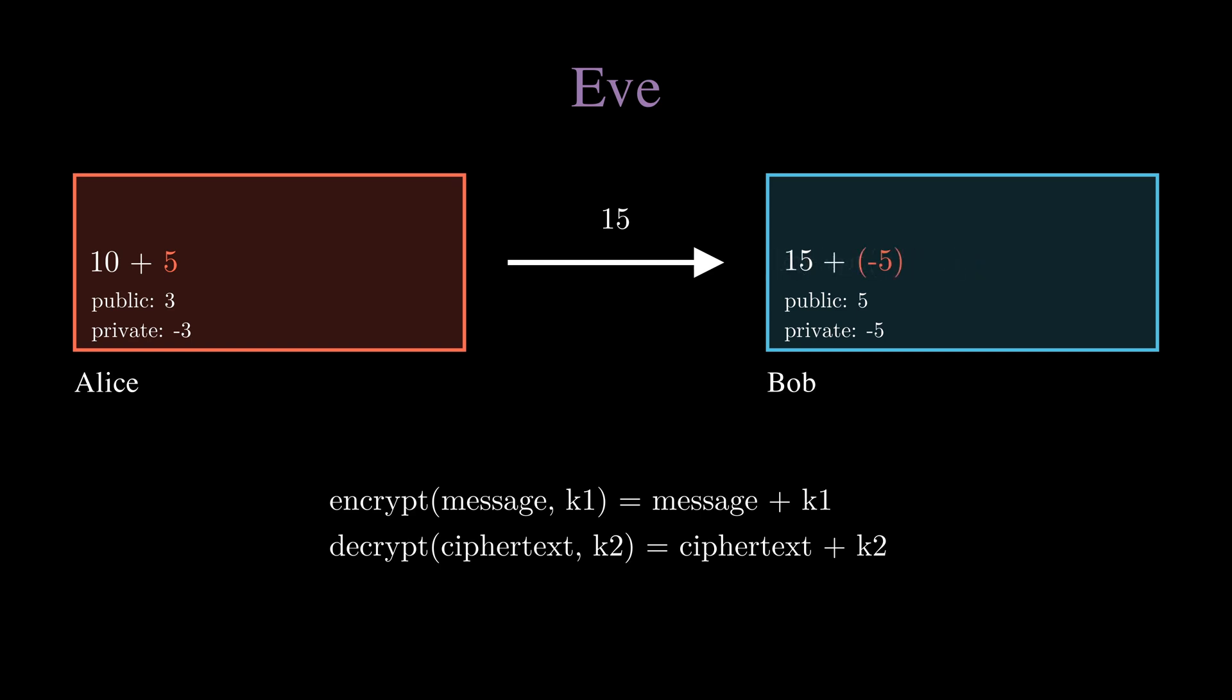If Eve is listening and hears 15, they also have access to the public key 5, however using that and adding it onto 15 gives 20, which isn't the decrypting message.